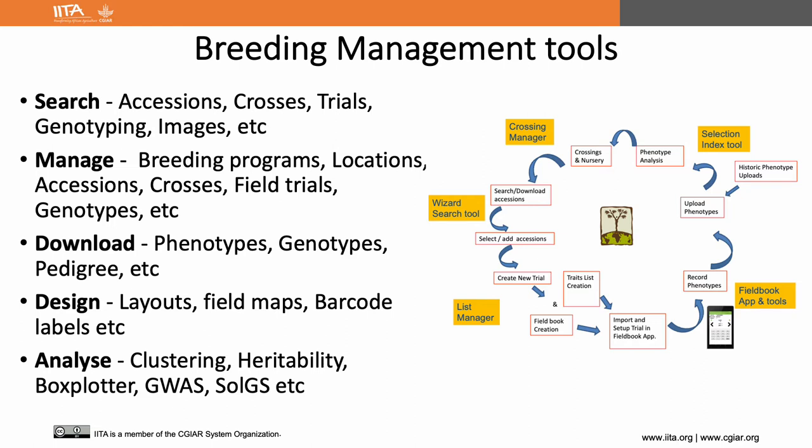CassavaBase allows you to search data individually based on accessions, plots, trials, locations, etc., and also by using a search wizard — which I usually call a magic wizard — that was improved by Brian during 2015 by implementing materialized views, which has vastly improved the speed to query data from the database across different data types. This is one of my favorite tools on CassavaBase, which I use almost every day for my data management queries.